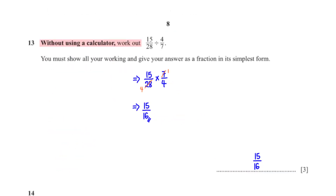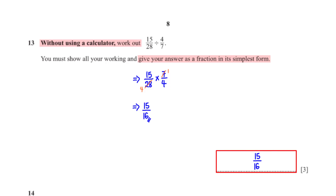Without a calculator, work out 15/28 ÷ 4/7, giving your answer as a fraction in its simplest form. We replace division with multiplication and use the reciprocal of 4/7, which is 7/4. So we have 15/28 × 7/4. Since 7 goes into 7 once and into 28 four times, the numerator is 15 × 1 = 15 and the denominator is 4 × 4 = 16. The answer is 15/16.